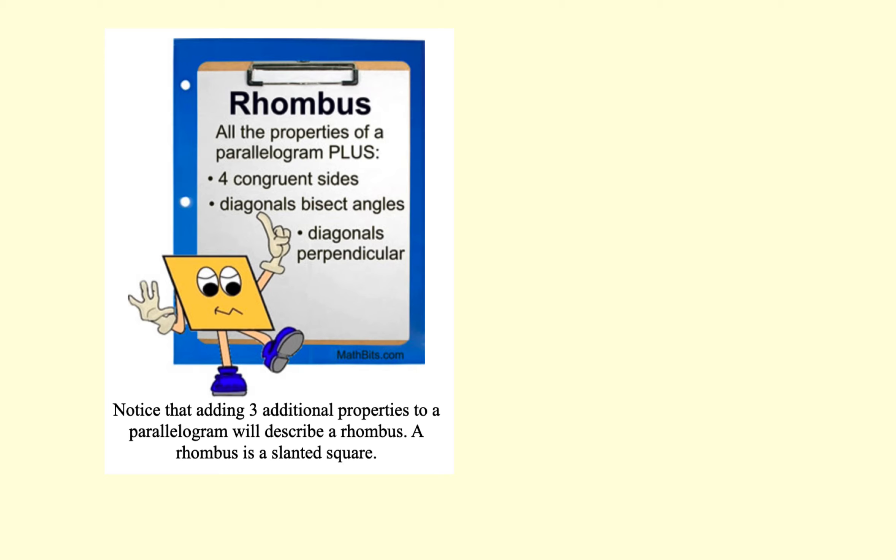Then we looked at the rhombus. The rhombus has all the properties of a parallelogram, plus it has four congruent sides, diagonals bisect angles, and the diagonals are perpendicular.